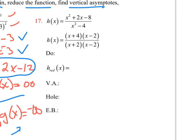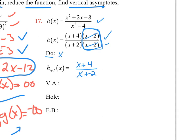For number 17, we have this function and I've factored it. Notice that two factors do cancel, so the reduced form is going to be (x plus 4) over (x plus 2). But the domain excludes both of those terms. The x minus 2 that cancels is going to give us a hole, so the domain is x can't be negative 2 nor can it be 2. For vertical asymptotes, the factor that's left — x plus 2 — gives us the vertical asymptote, and x equal to 2 would be a hole.